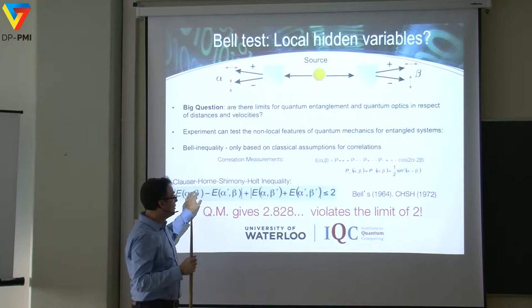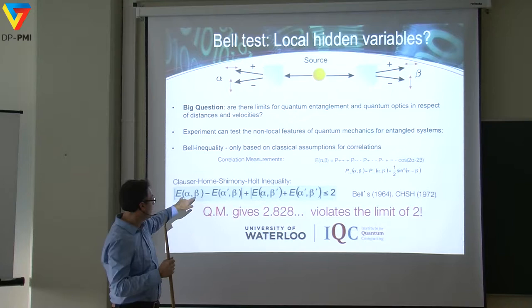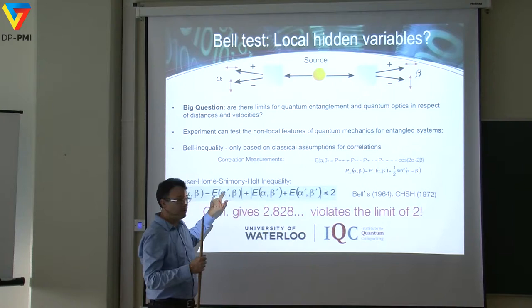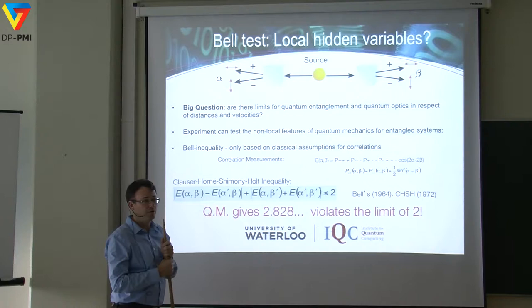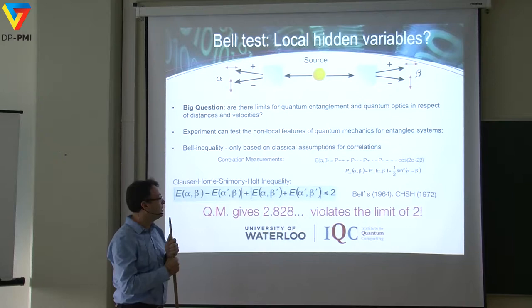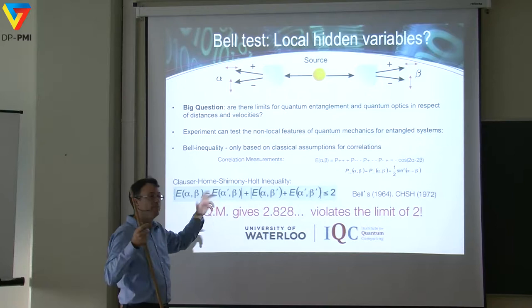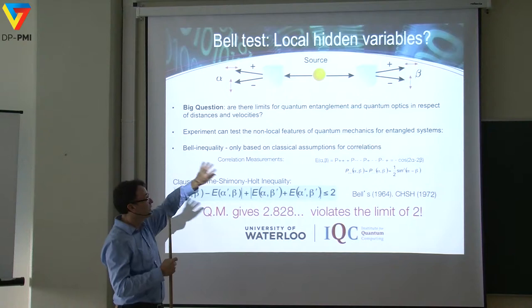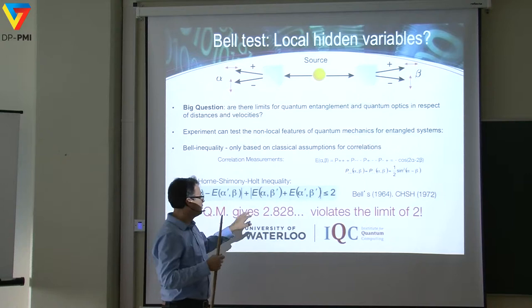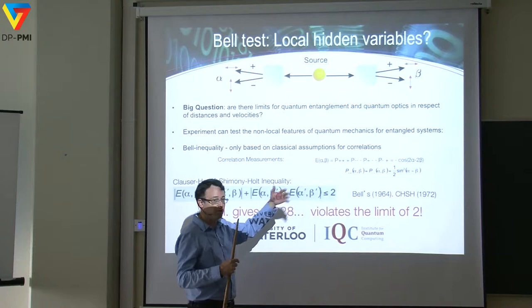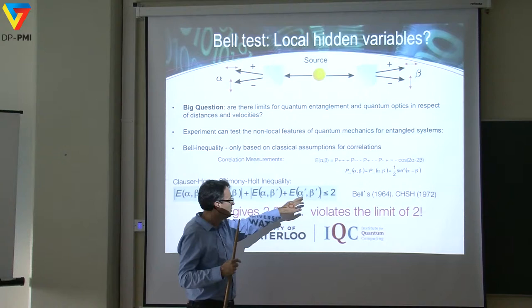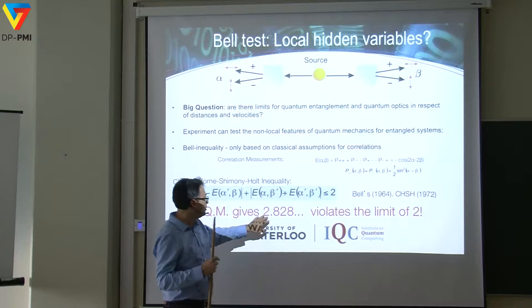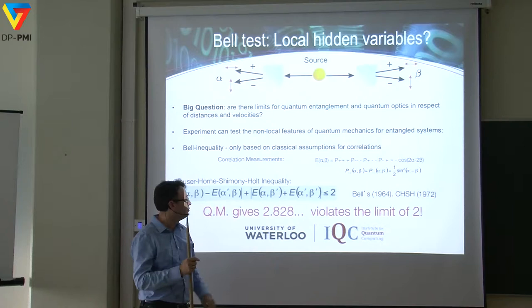The correlations measured in combinations of those settings would always have to obey a certain bound — this is the Bell inequality. Quantum mechanics violates this bound. The famous CHSH inequality is a slightly more advanced version of the Bell inequality: the classical bound is 2, while quantum mechanical correlations give 2√2, which equals 2.82. It clearly violates this limit.